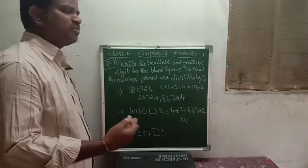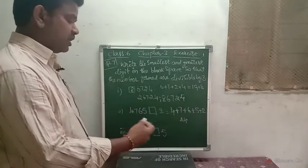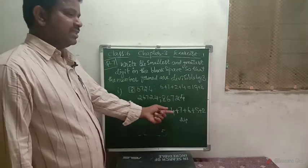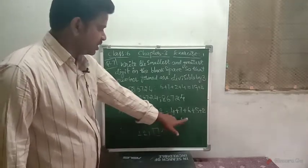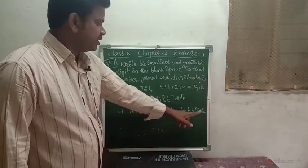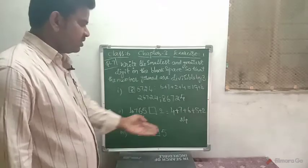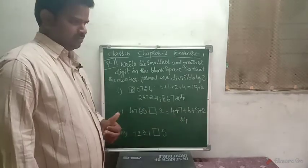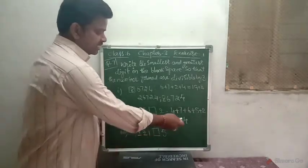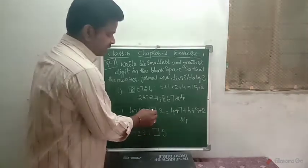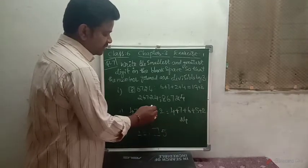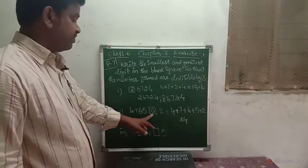So what is the nearest multiple of 3 after 24? Actually, 24 is already a multiple of 3. So nothing needs to be added. Just place 0 here. Then it is also divisible by 3.